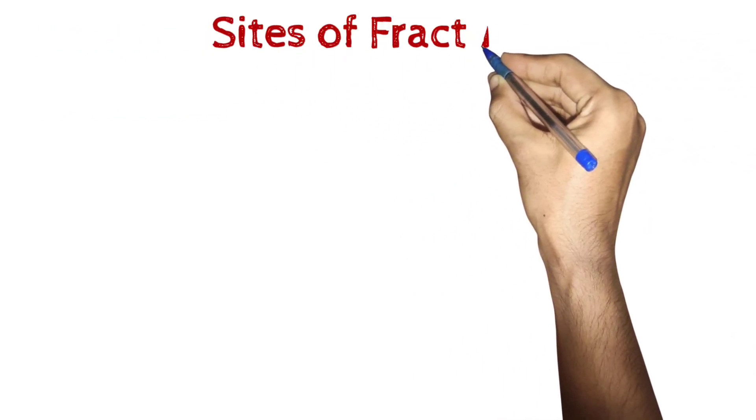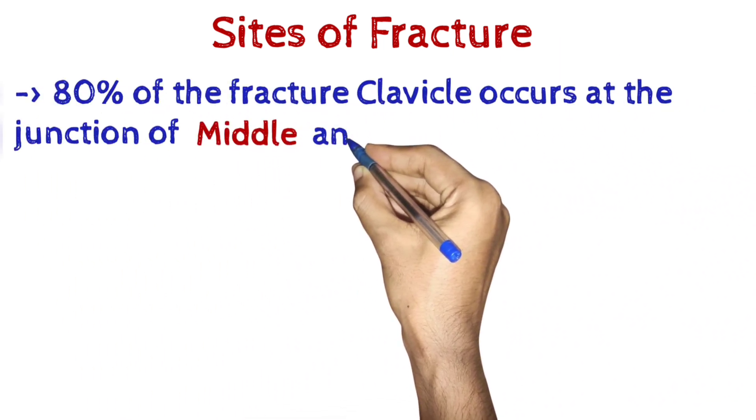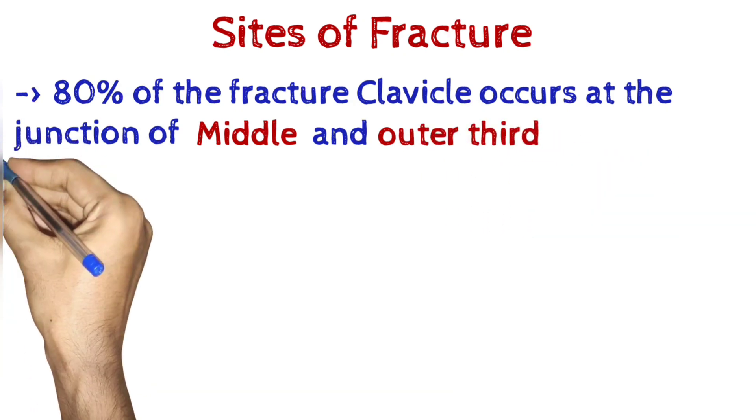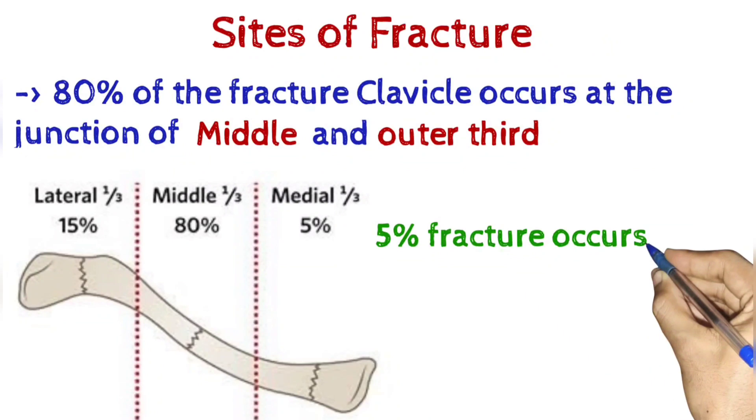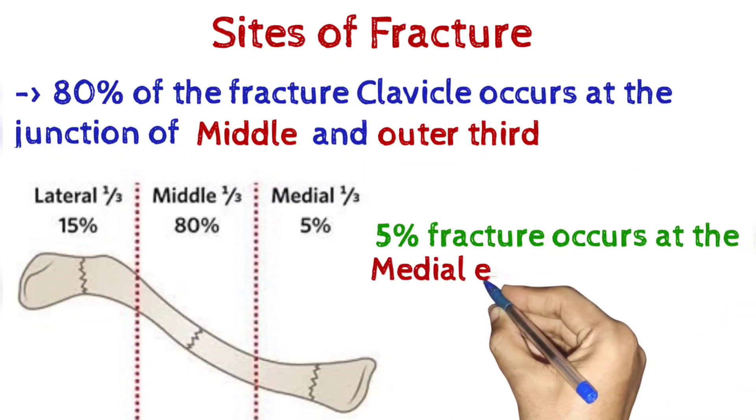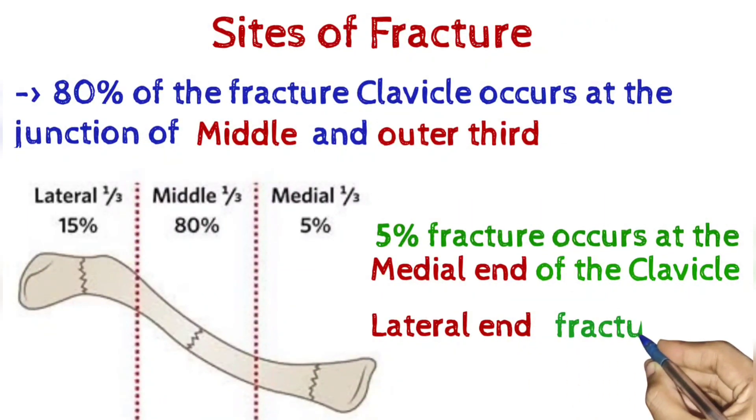Sites of fracture: 80% of clavicle fractures occur at the junction of middle and outer third. 5% of fractures occur at the medial end of the clavicle. Lateral end fractures are uncommon.